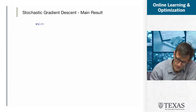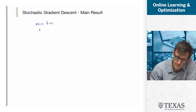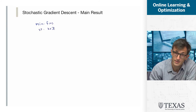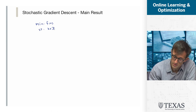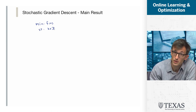Welcome back. We're talking about stochastic gradient descent. This is a setting where we want to minimize a convex function, except we're not going to use gradients directly.